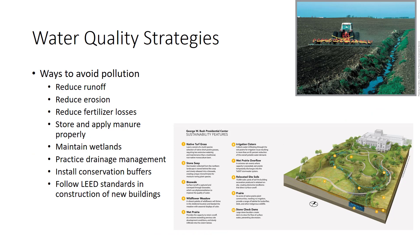Ways to avoid water pollution are largely covered in various sections of this video series. Here is a brief summary: reduce runoff that can carry contaminants; reduce erosion that can carry contaminated soil; reduce fertilizer losses in percolating water; apply and store manures properly; retain and restore wetlands that can filter pollutants from runoff; practice drainage management in artificially drained fields; install conservation buffers along streams and other bodies of water to slow and filter runoff; and follow LEED standards in construction of new buildings.